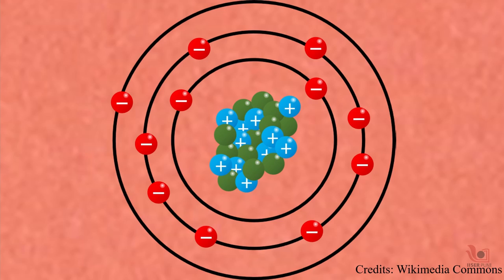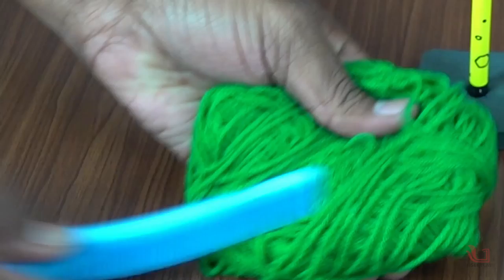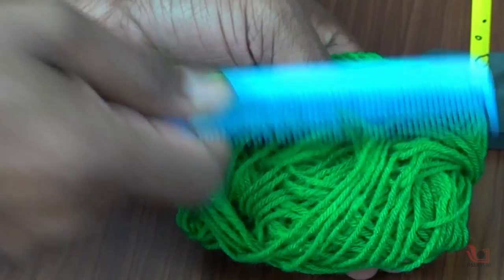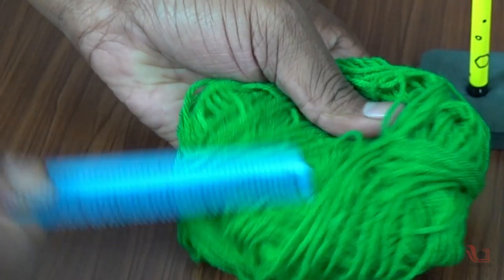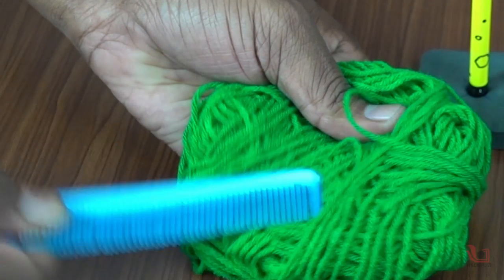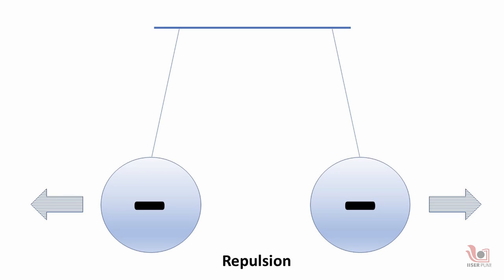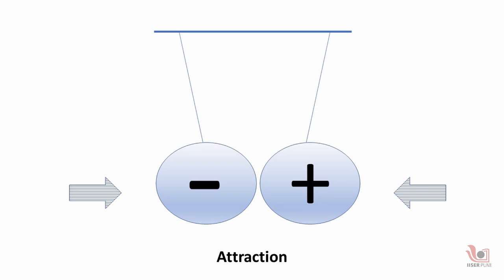But when two objects rub together, some of the electrons transfer from one object to the other, creating a positively or negatively charged object. Materials with like charges, positive or negative, repel or move away from each other. While those with opposite charges, they attract.